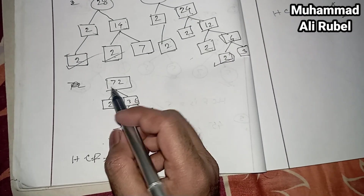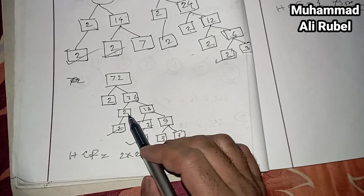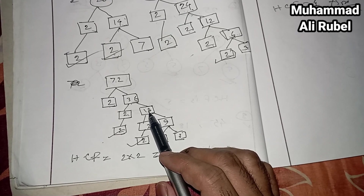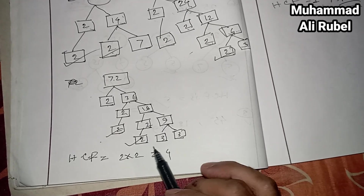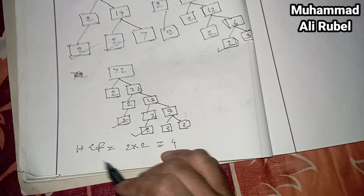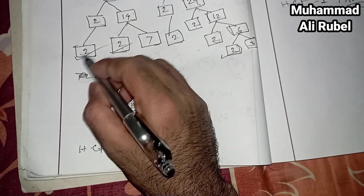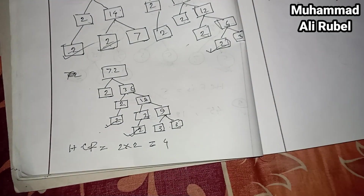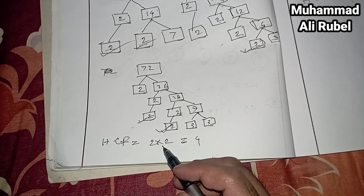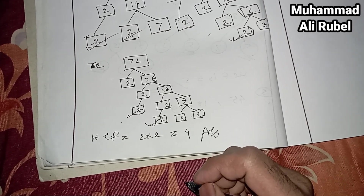And for 72: 2 times 9 equals 18. Looking at the common factors, the HCF is 4. Two times two equals 4. That's the answer.